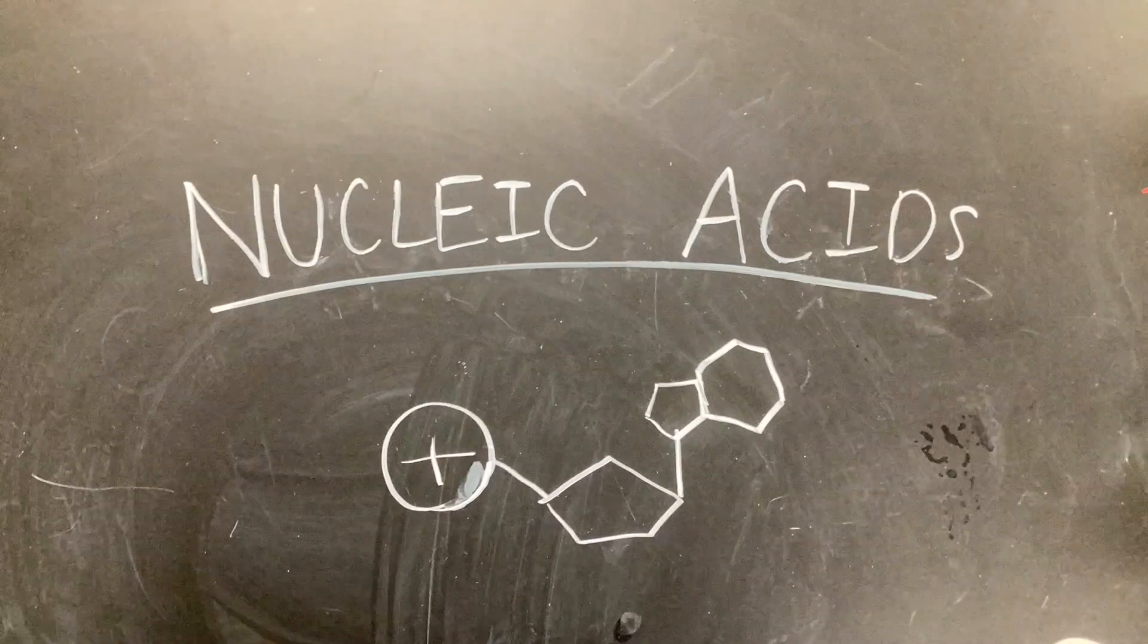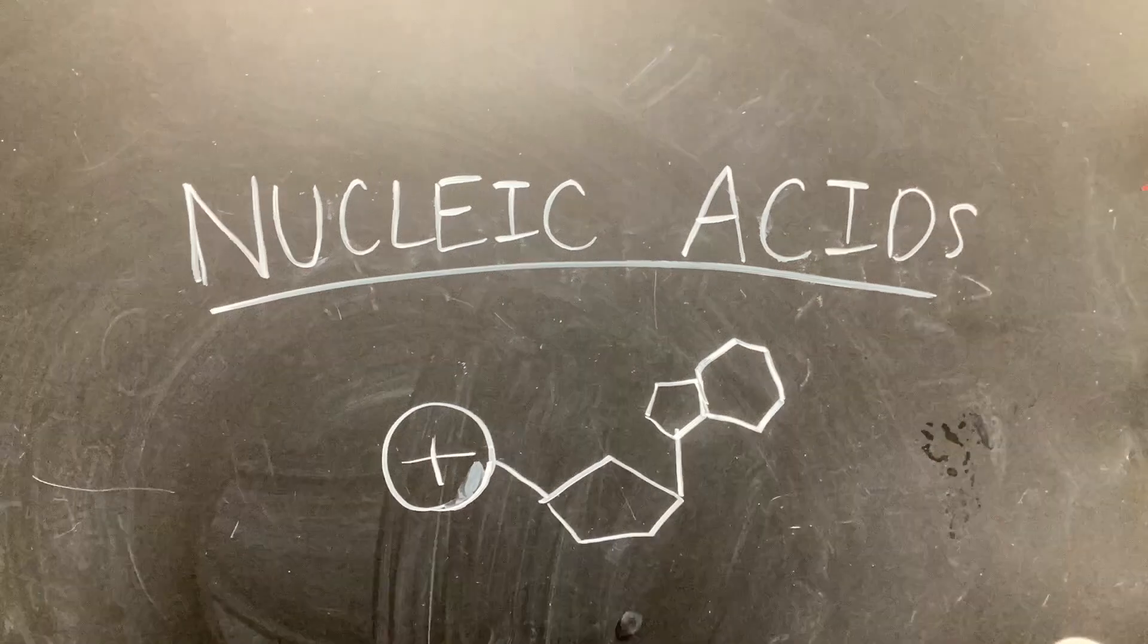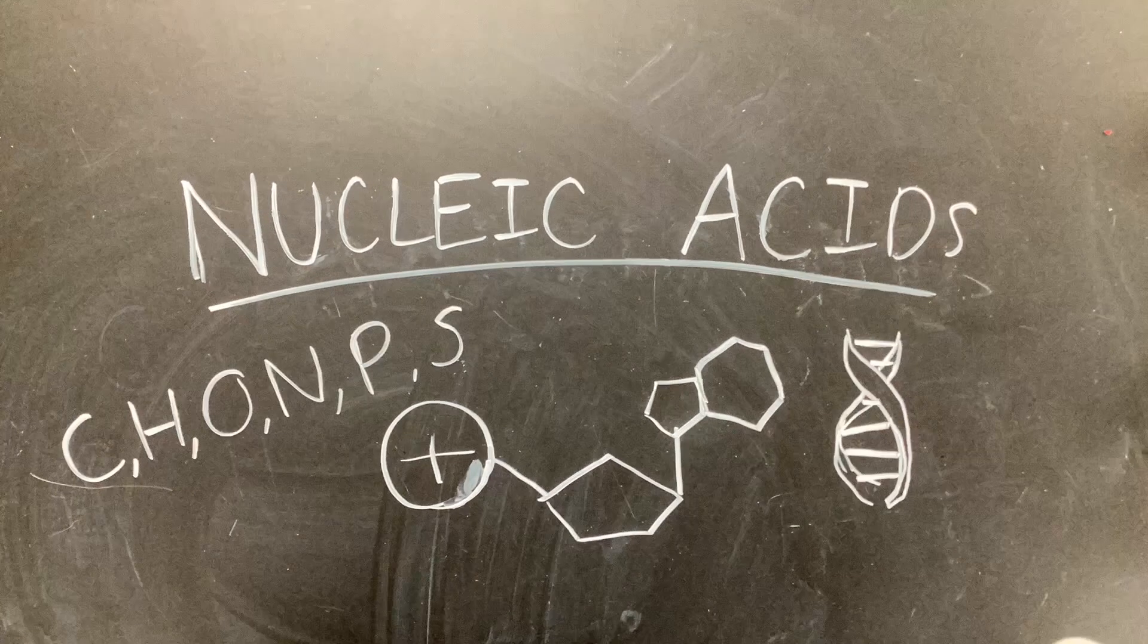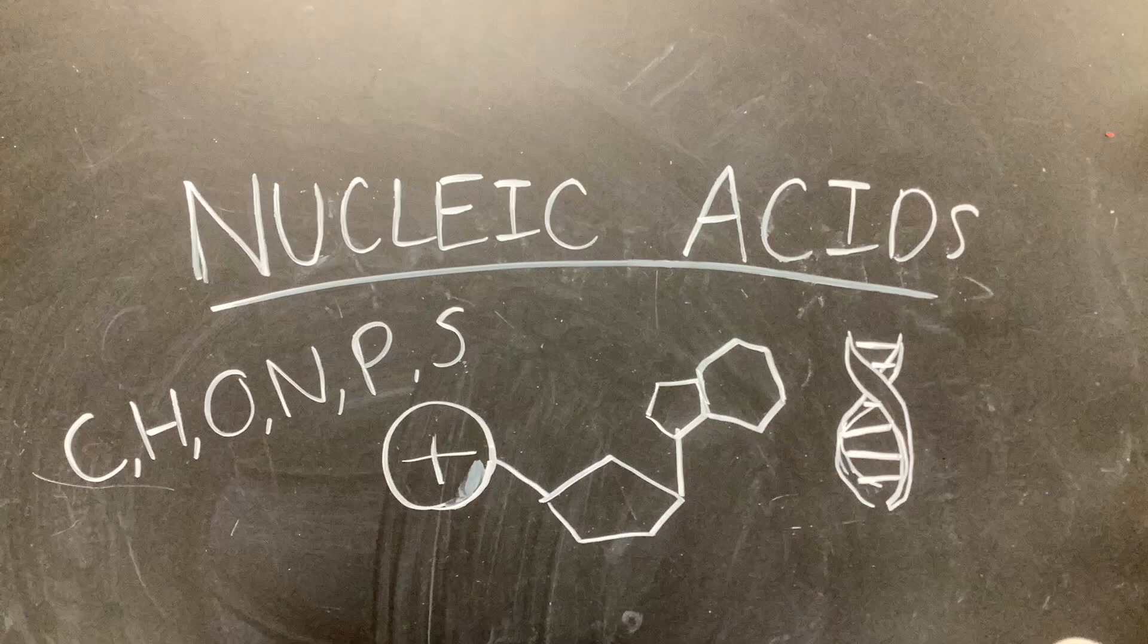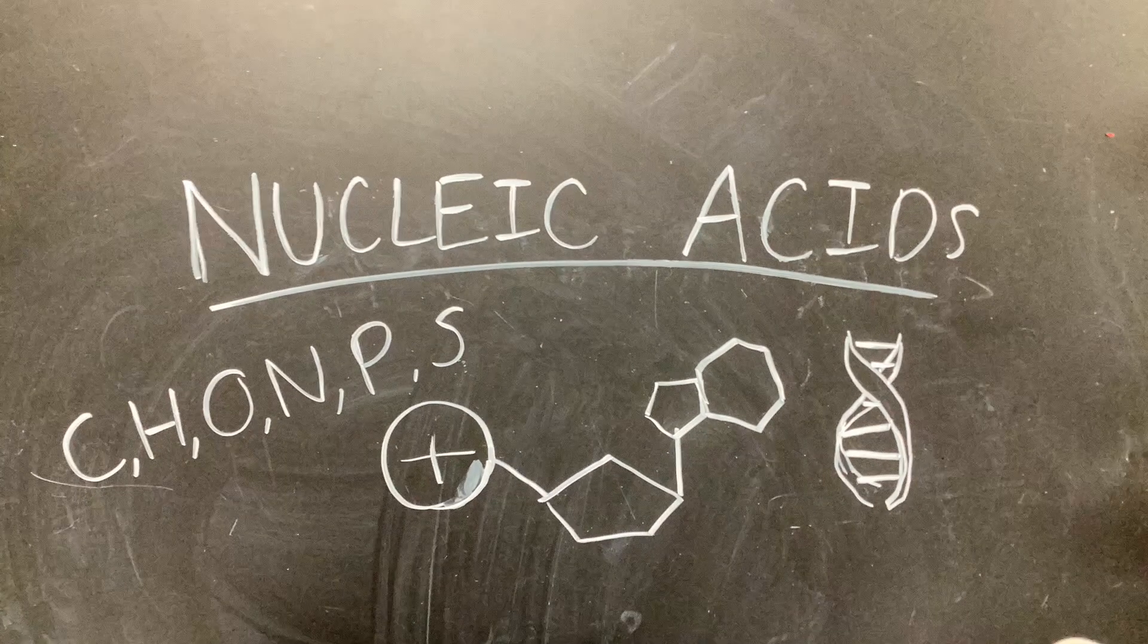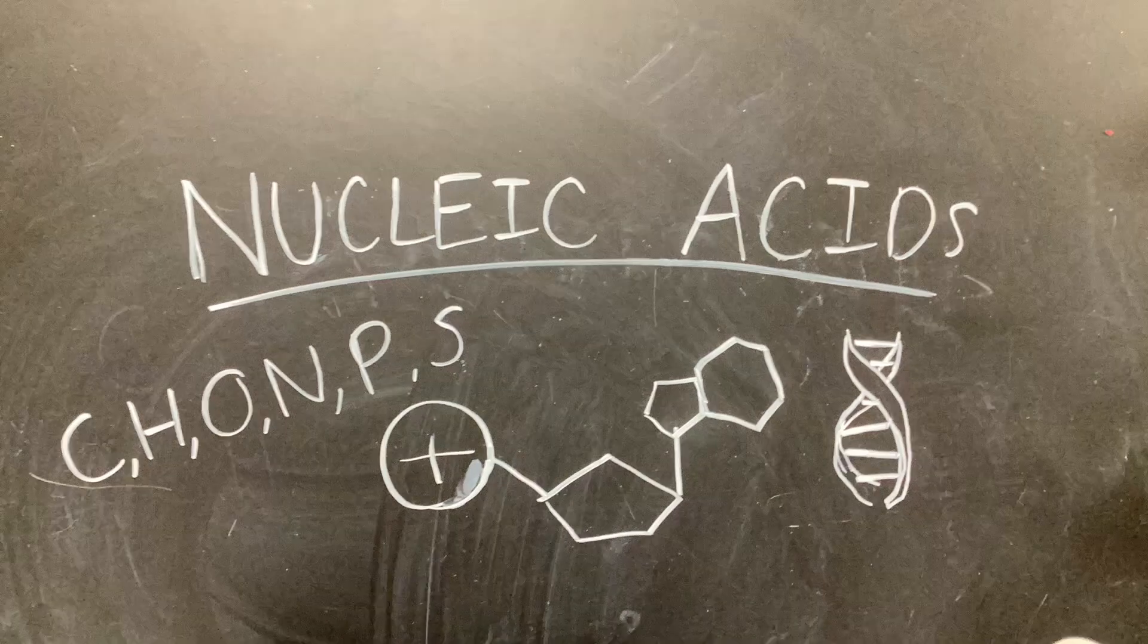The fourth and final macromolecule is nucleic acids, made up of carbon, hydrogen, oxygen, nitrogen, phosphorus, and sulfur. Nucleic acids make up DNA, and ATP is an important nucleic acid used in cellular respiration.